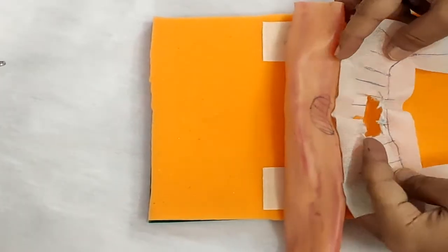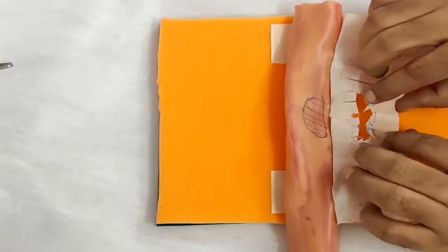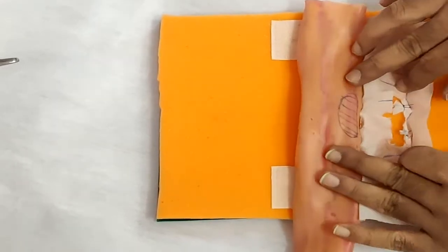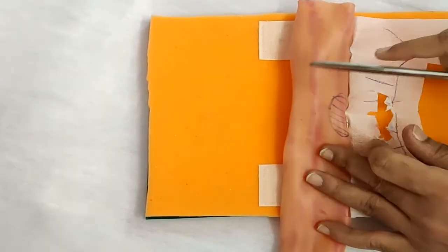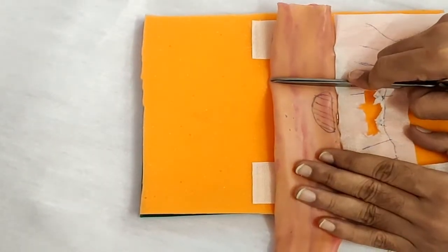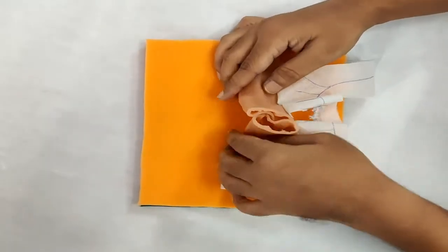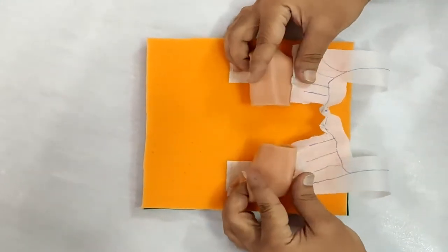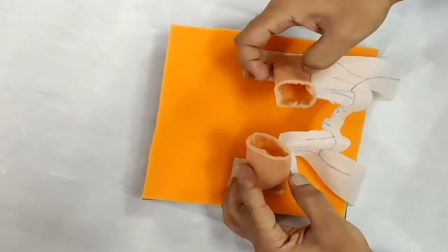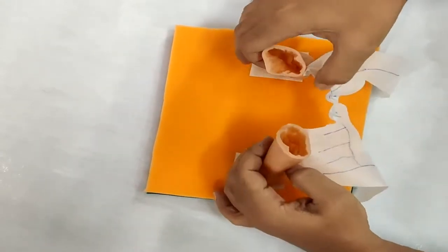So we have devascularized this segment of the bowel and now we can cut the diseased segment of the bowel. So here we have cut the segment of the bowel. There is a defect in the continuity of the bowel and defect in the mesentery.